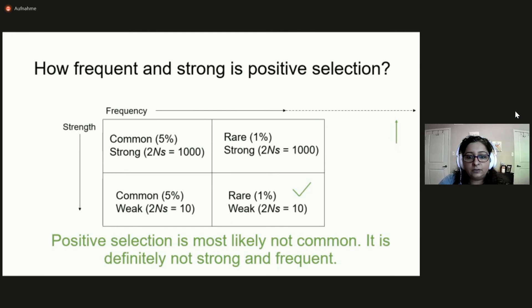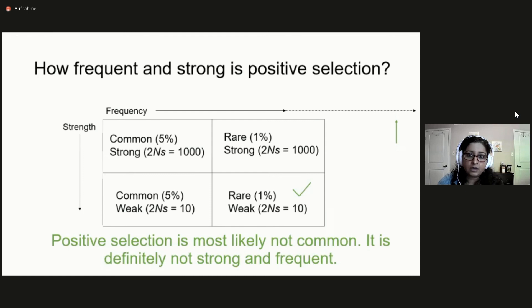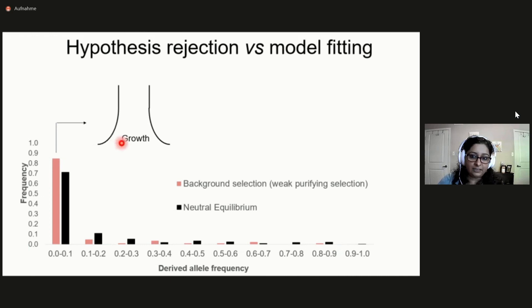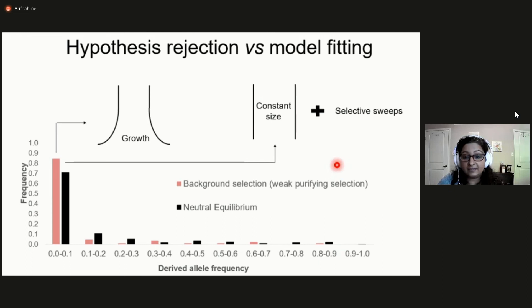A point I would like to make is that by forming an appropriate null model, our approach allowed us to reject some specific evolutionary scenarios — that is, strong and frequent positive selection. This is somewhat important because an alternative approach would be to have no null model, but to simply assess the fit of multiple models. One has to be cautious going down that avenue. For instance, one can technically fit a model of growth quite confidently to an equilibrium population experiencing background selection, but that wouldn't reveal its true evolutionary history. Similarly, one can always fit a model of positive selection to basically any observed pattern, especially when only a single statistic is considered — but that does not make it the correct estimate.